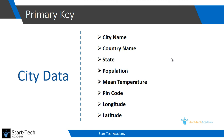Pin code or zip code cannot be the same for two cities, so we can assign pin code or zip code as our primary key. Similarly, a combination of latitude and longitude is unique for each city, so we can use a combination of longitude and latitude to create a primary key — this is also an example of a composite key.